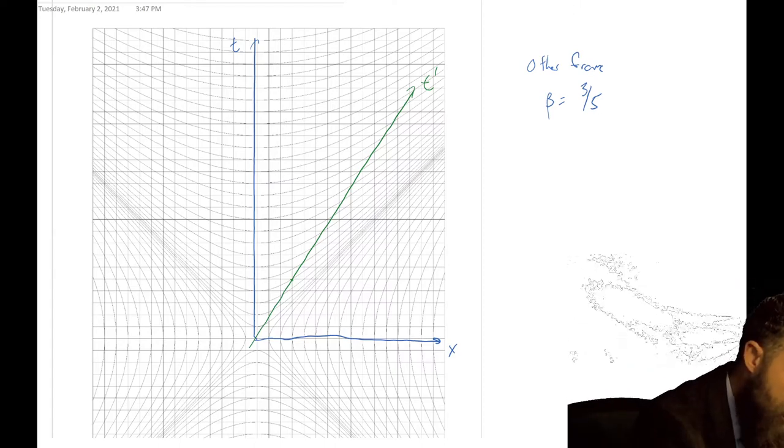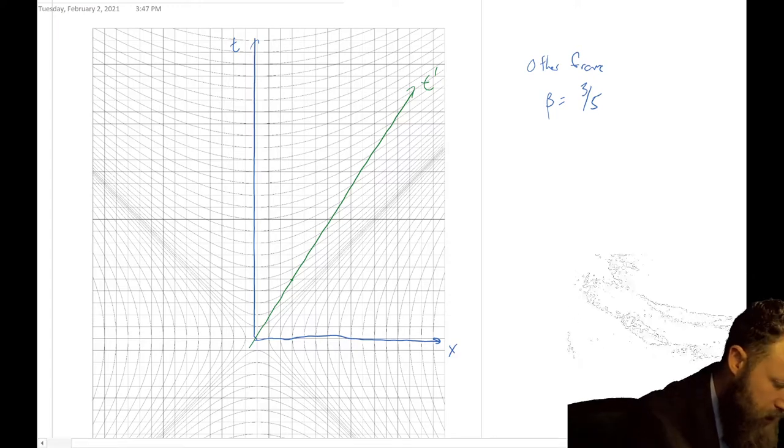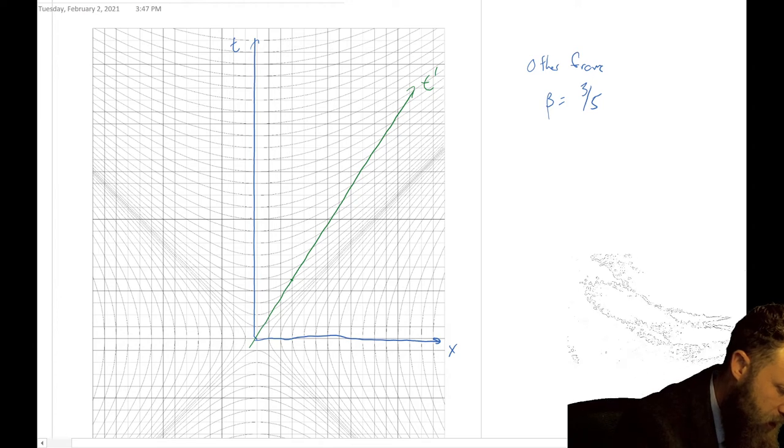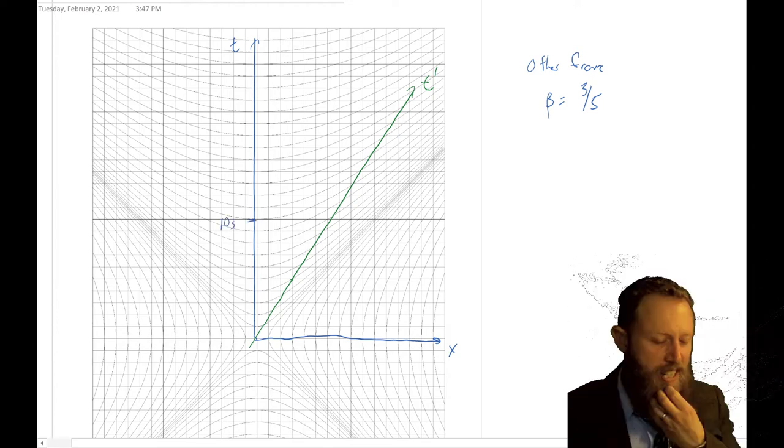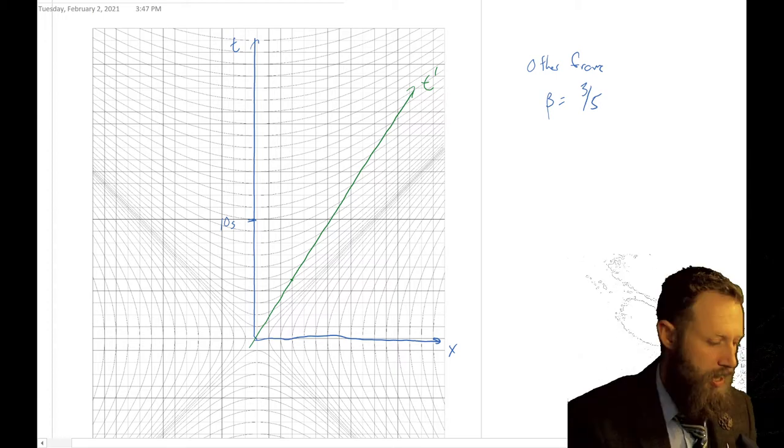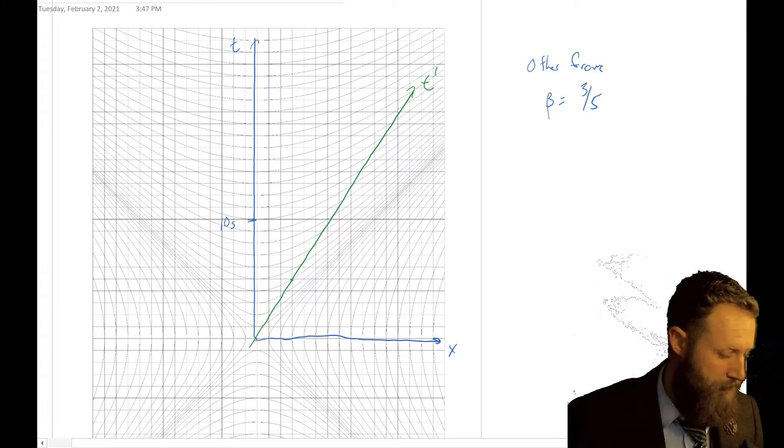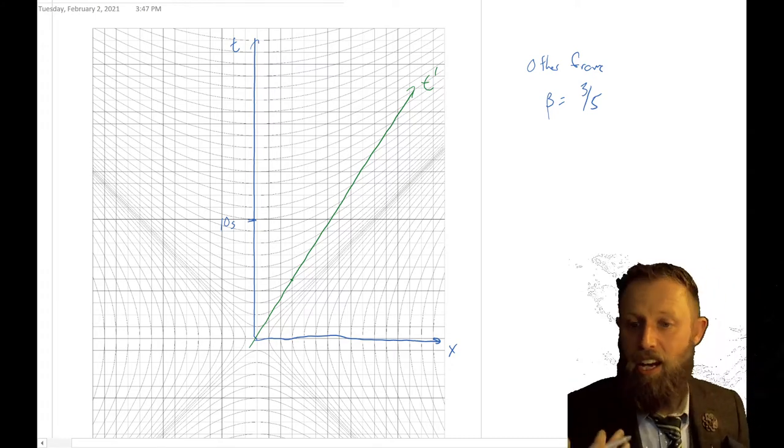The hard part is trying to figure out how to actually mark the axes. For instance, if we have a point, let's say one, two, three, four, five, six, seven, eight, nine, ten. So this is 10 seconds. Where is the point that's 10 seconds on the prime, in the prime frame?